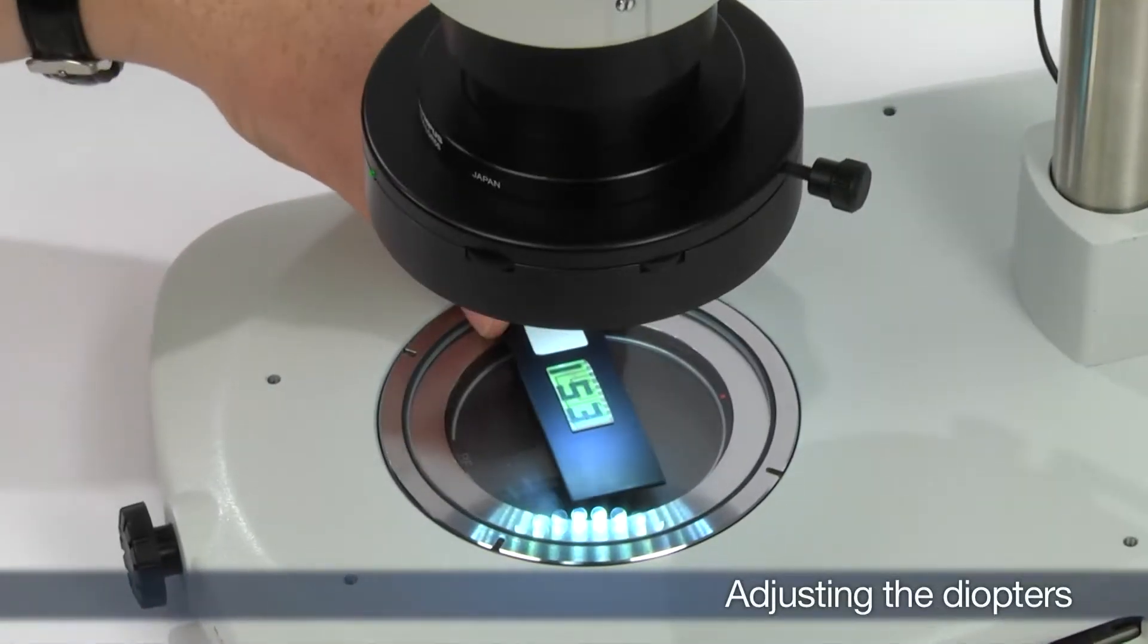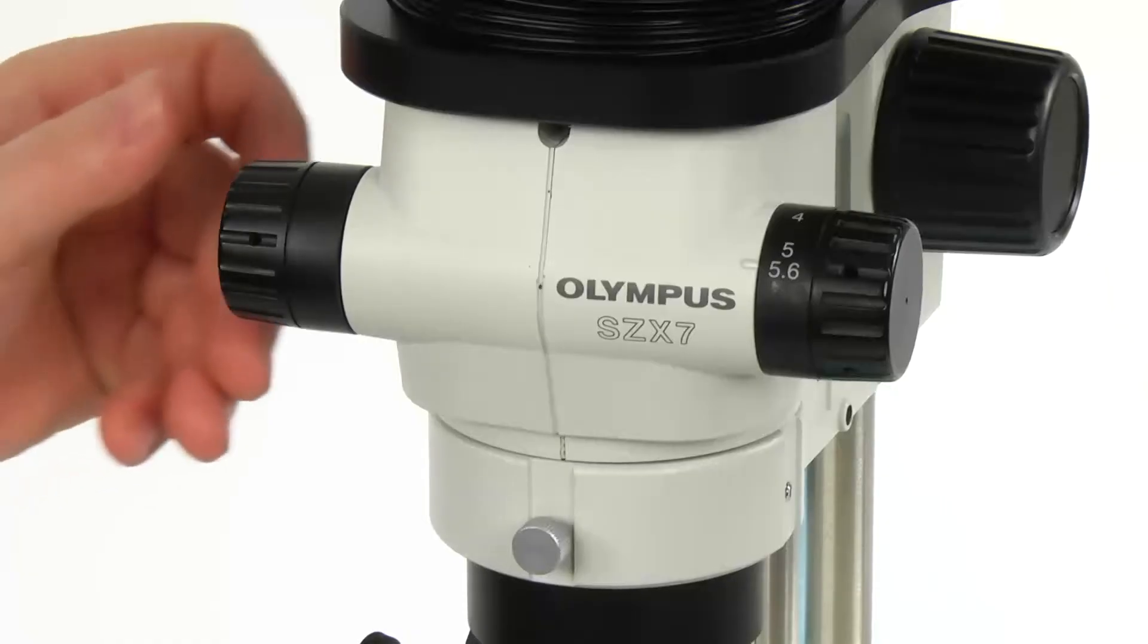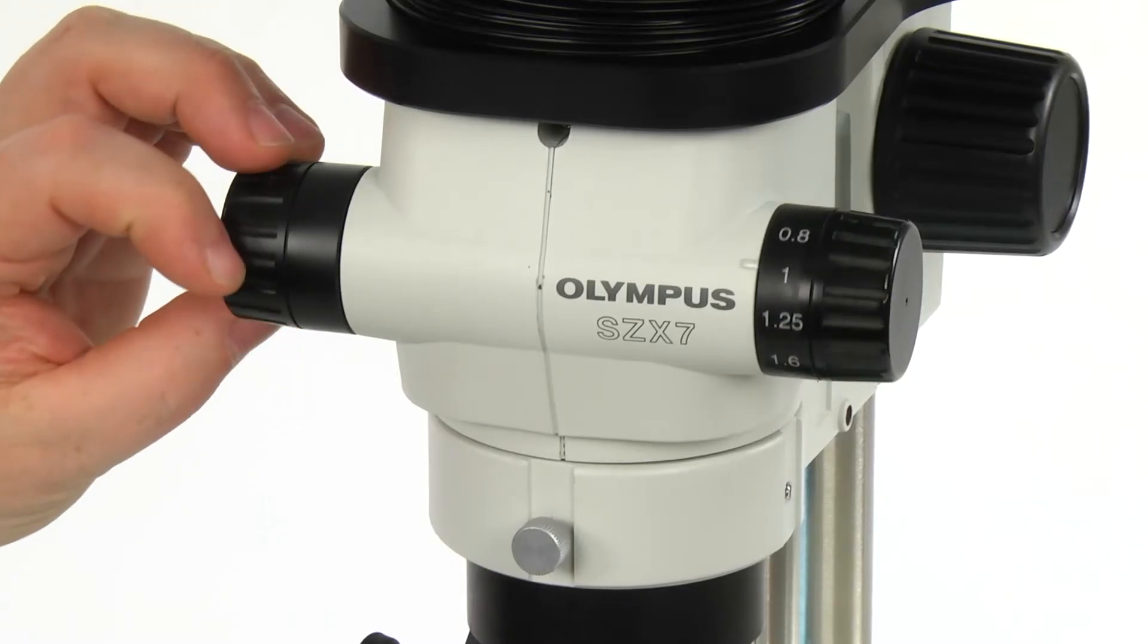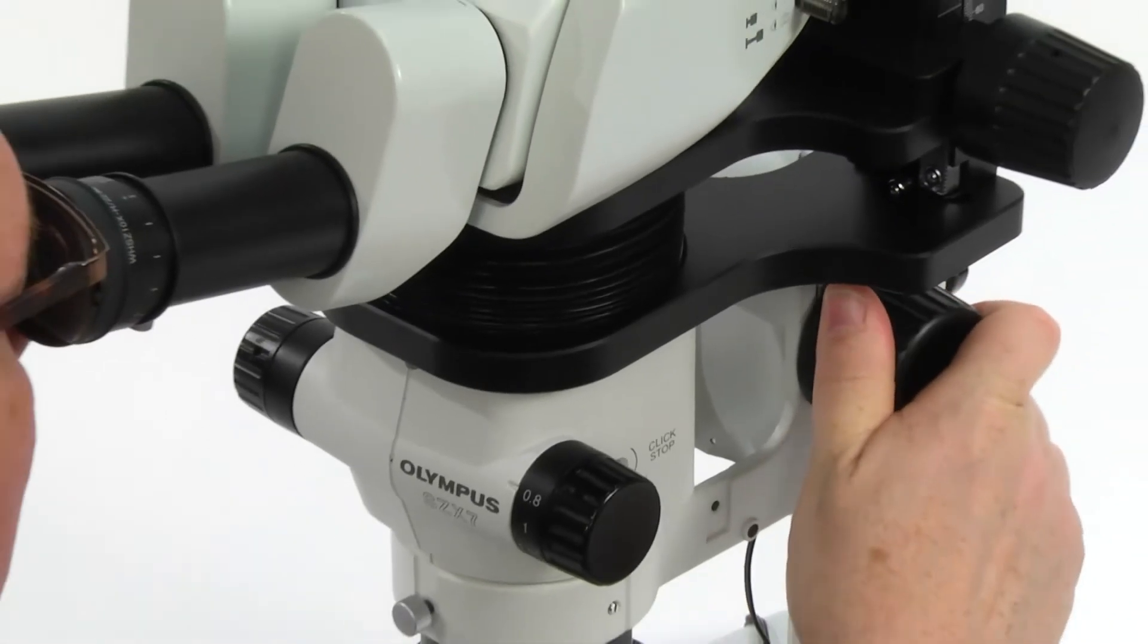First, place a simple large sample that will be easy to observe on the stage plate. Set the zoom adjustment knob for the lowest magnification and rotate the focus adjustment knob to bring the sample into focus.